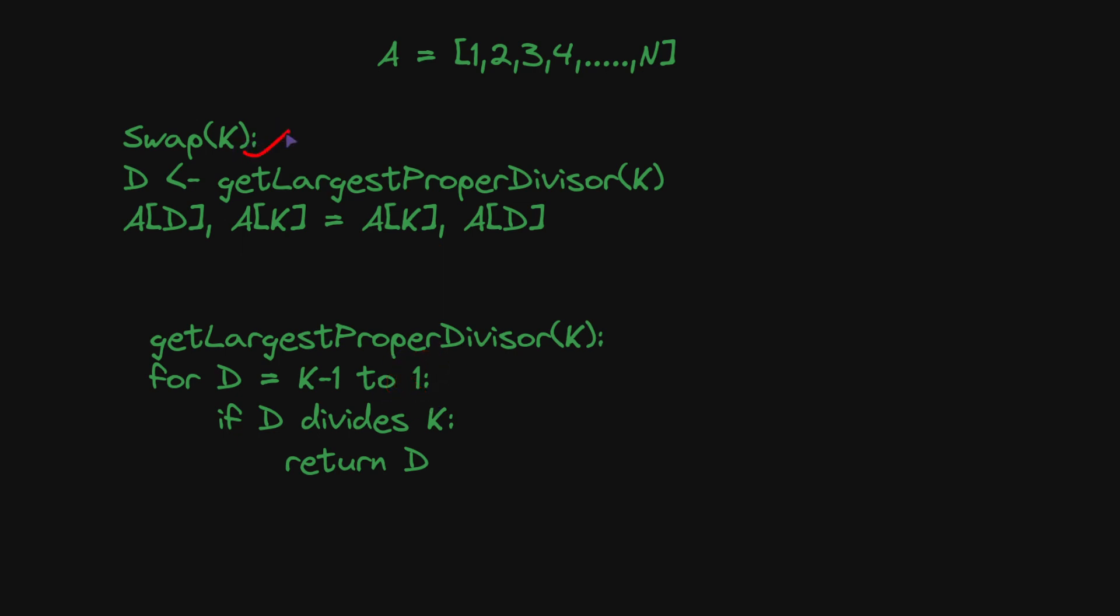Swap k is defined as given an array, d is the largest proper divisor of k. Then we swap ak and ad by reassigning ak to ad and ad to ak. This is Python notation. You can also use a temporary third variable to swap numbers.